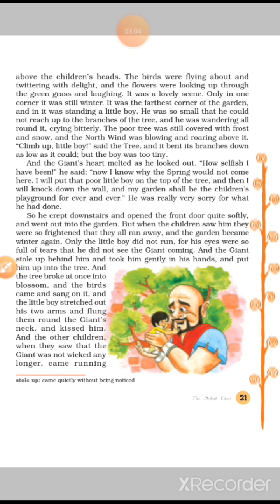It was the farthest corner of the garden and in it was standing a little boy. Woh bohot hi zyada door tha garden ke — woh jo corner tha woh bohot hi zyada alag tha. Aur vahaan pe dekh sakte hain ki chhota sa bachcha vaha pe khada ho rakha tha. He was so small that he could not reach up to the branches of the trees and he was wandering all around it, crying bitterly. Woh apne haat oopar karta toh tha, lekin usse branches pakad mein nahi aati thi, jiski wajah se usne rona start kar diya. The poor tree was still covered with frost and snow, and the north wind was blowing and roaring above it.